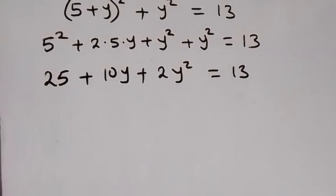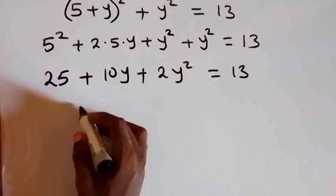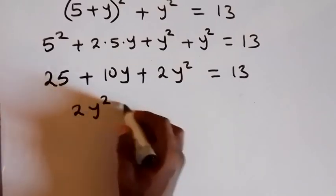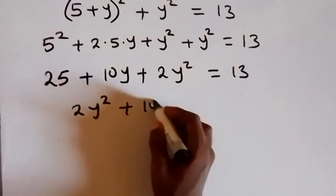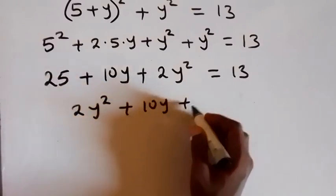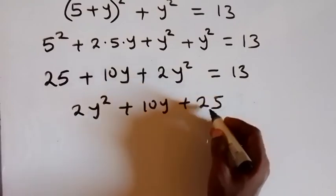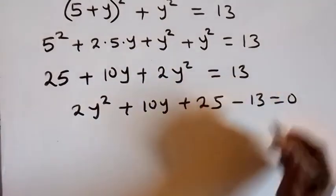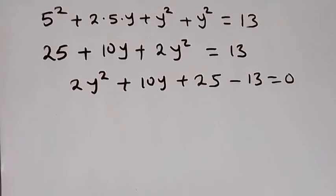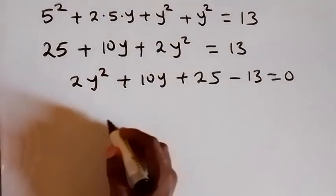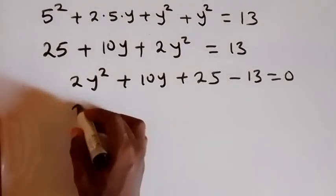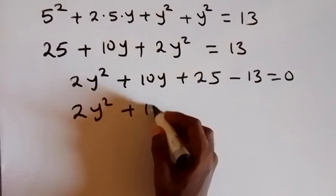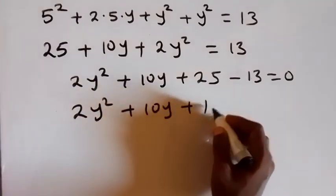Then next, we have 2y squared plus 10y plus 25, then we take 13 to this side, so minus 13, which equals to 0. Then simplifying, we have 2y squared plus 10y plus 12, now equals to 0.